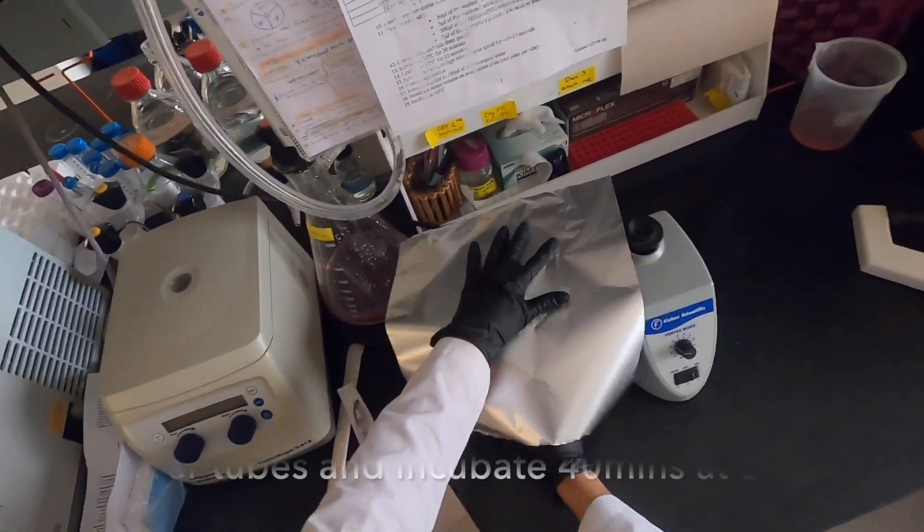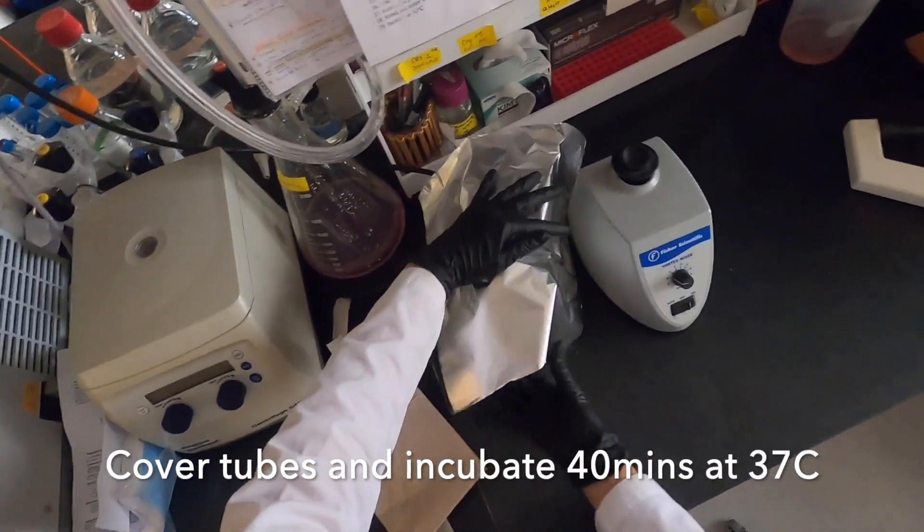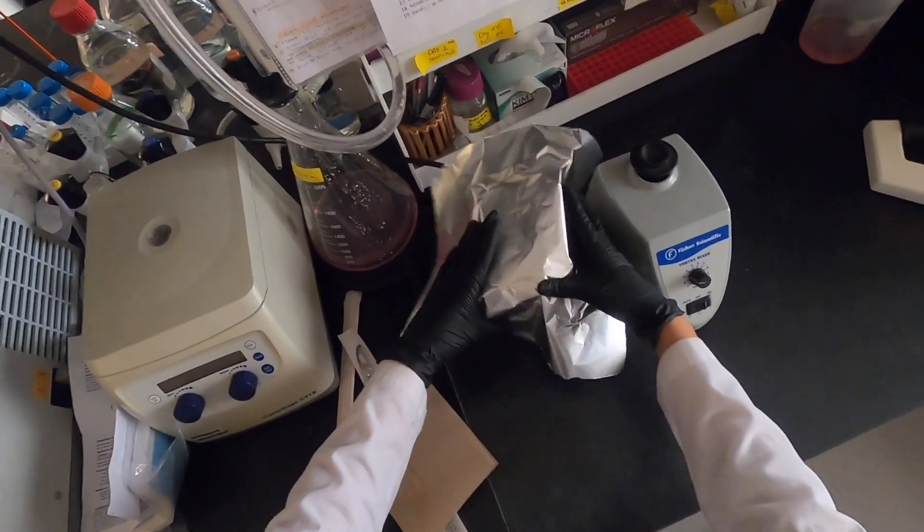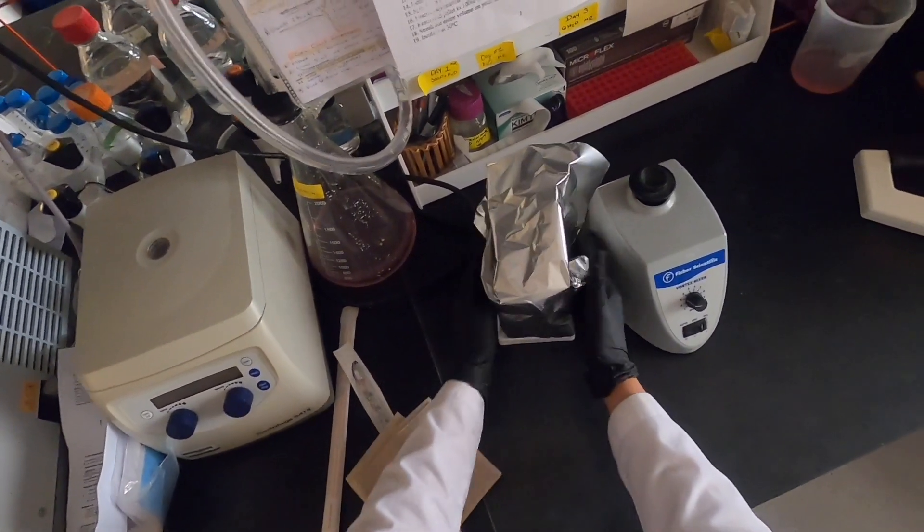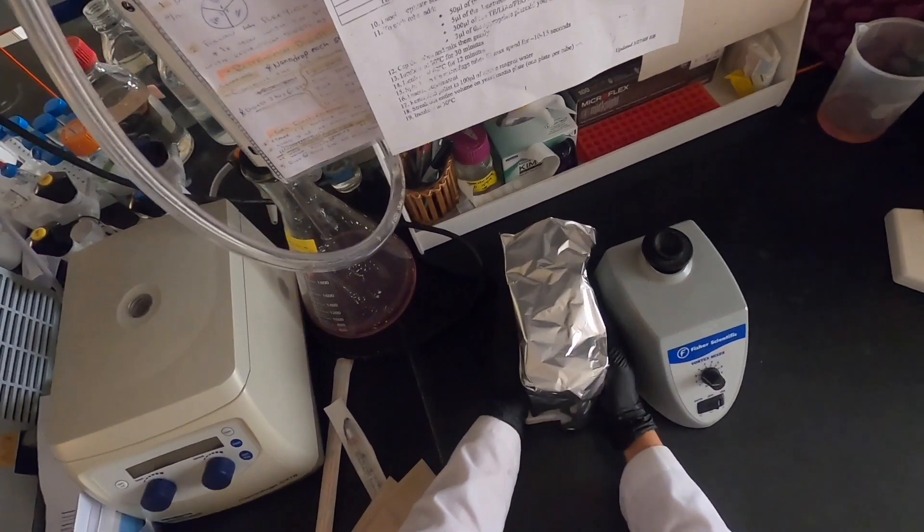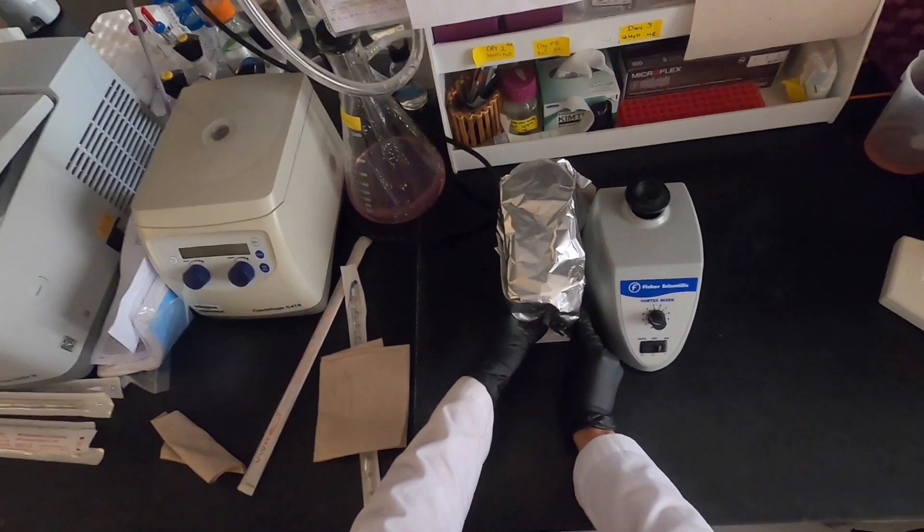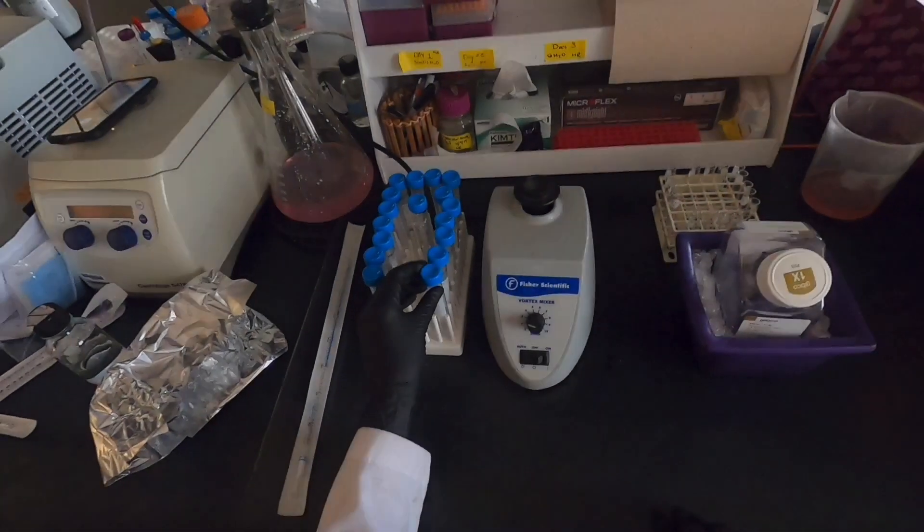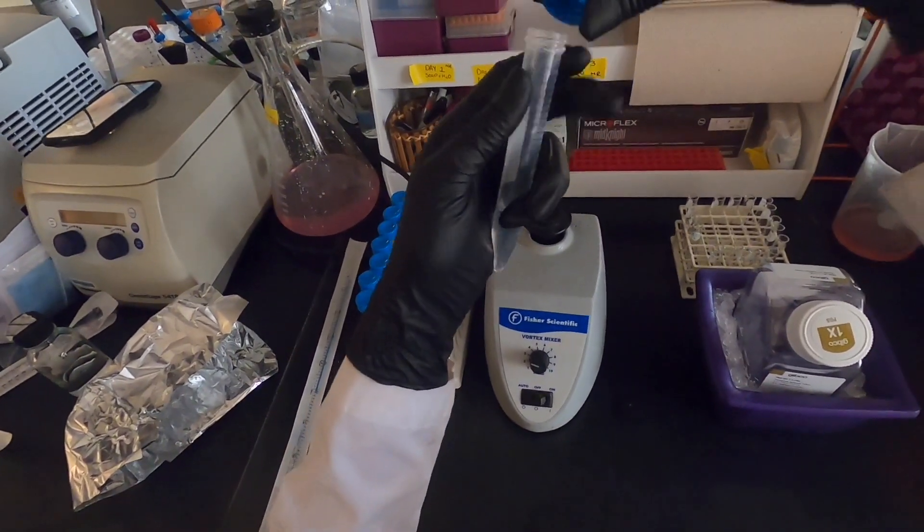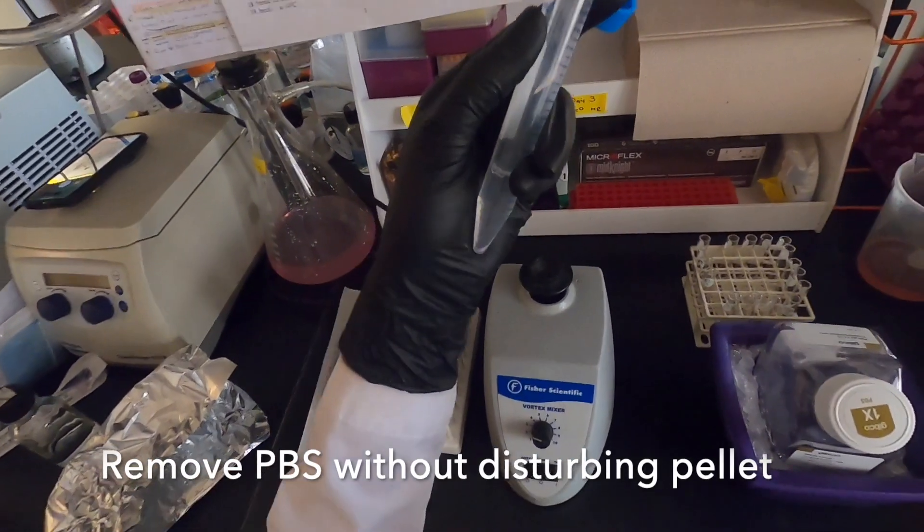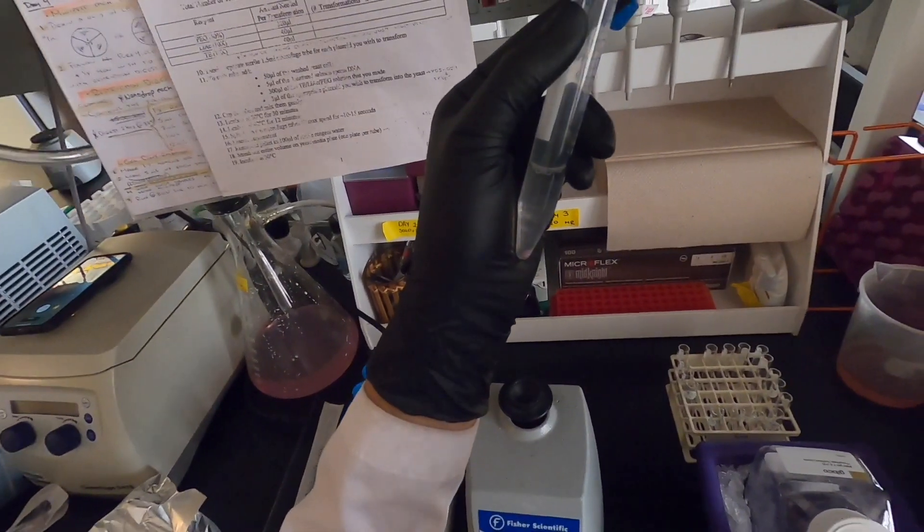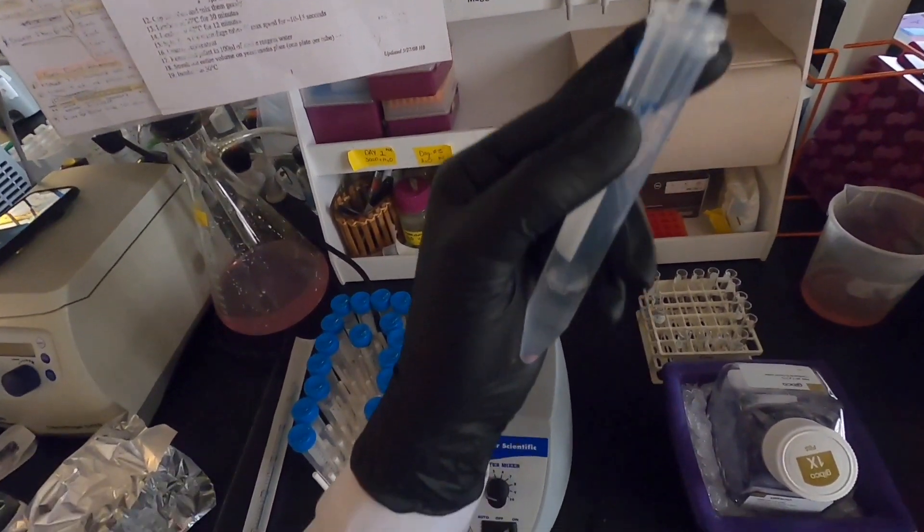Now we will incubate our cells with PI for 40 minutes. We are almost done with our experiment. We are now just adding 3 mLs of PBS and following up with the centrifugation. In order to remove the PBS, we will once again pipette out or aspirate gently in order to prevent disturbing the pellet.